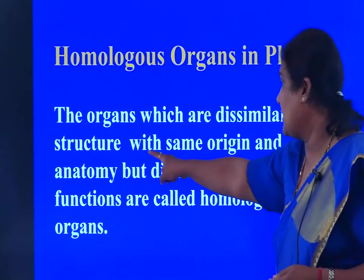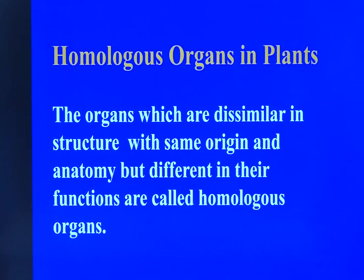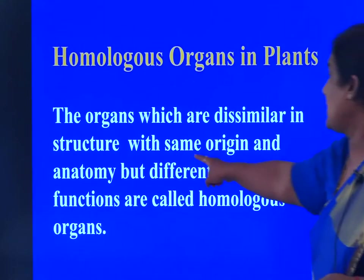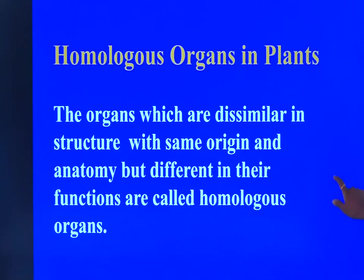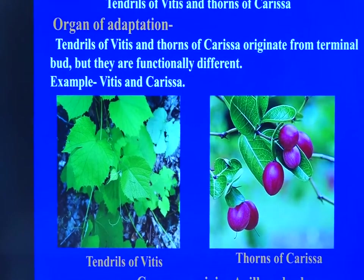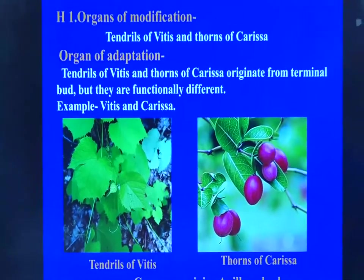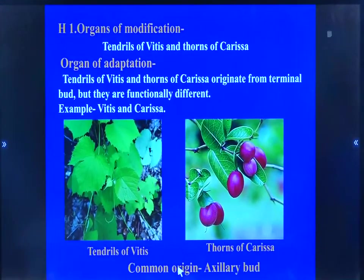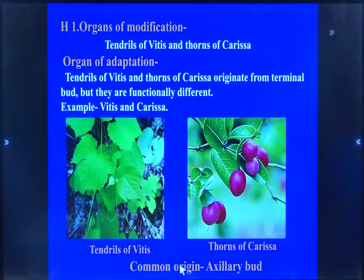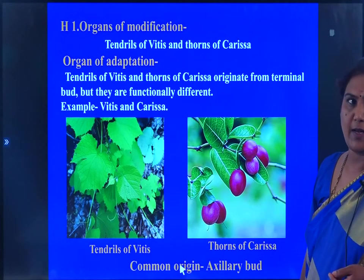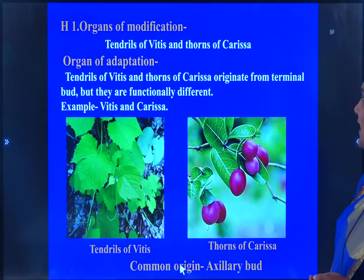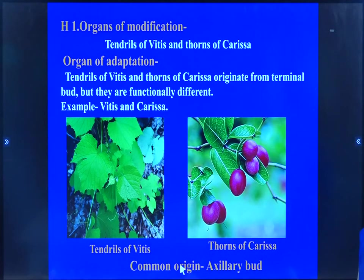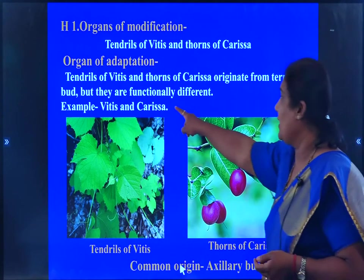Once again, have a look at this. The organs are dissimilar in their structure, but they have the same common origin and anatomy, but functionally they differ. Coming on to the study of organs of modification and adaptations, the homologous organs in plants — the tendrils of Vitis and thorns of Carissa both originate from the terminal bud itself. They have a common origin, but functionally they differ.